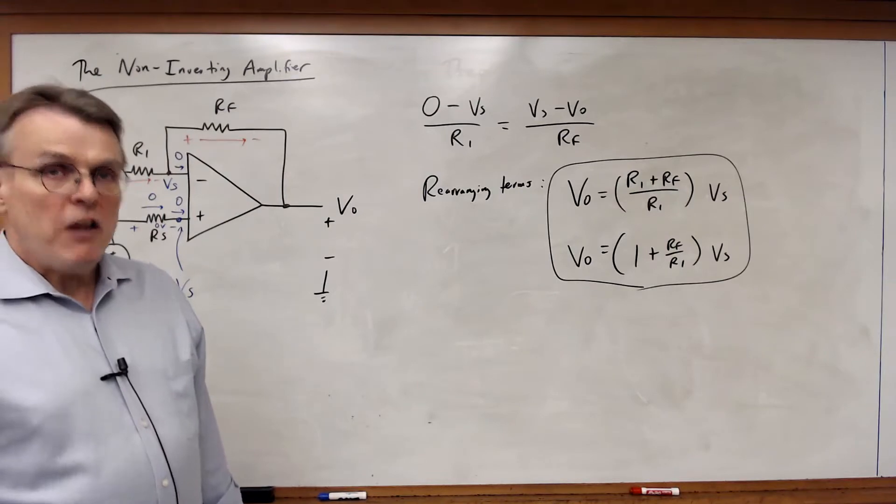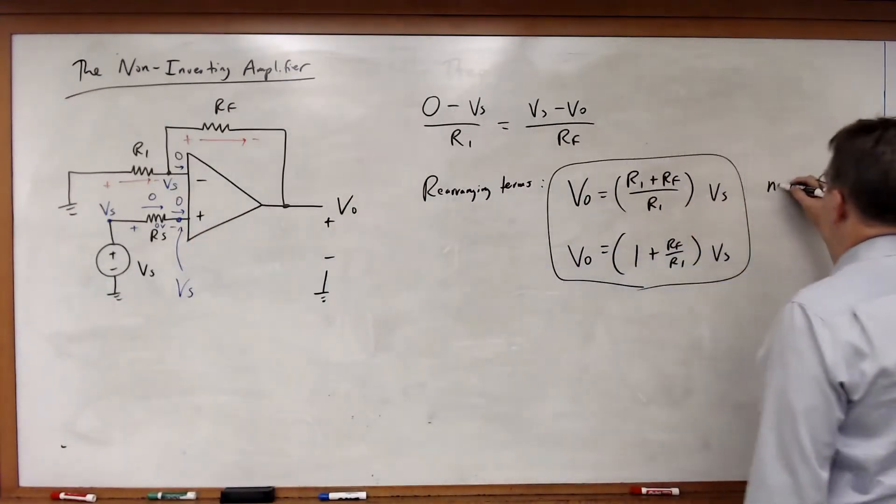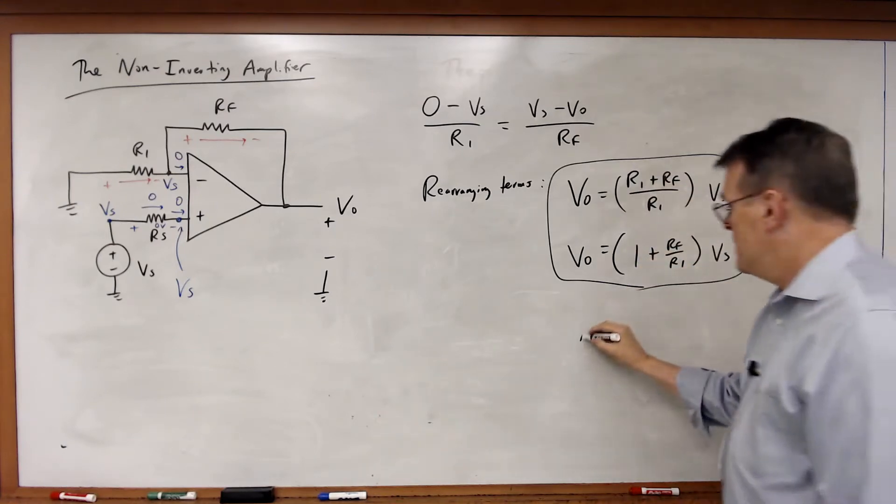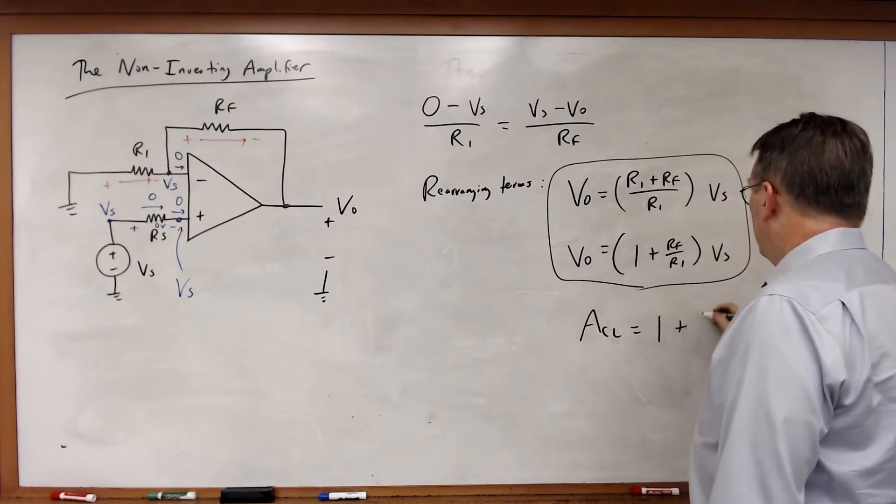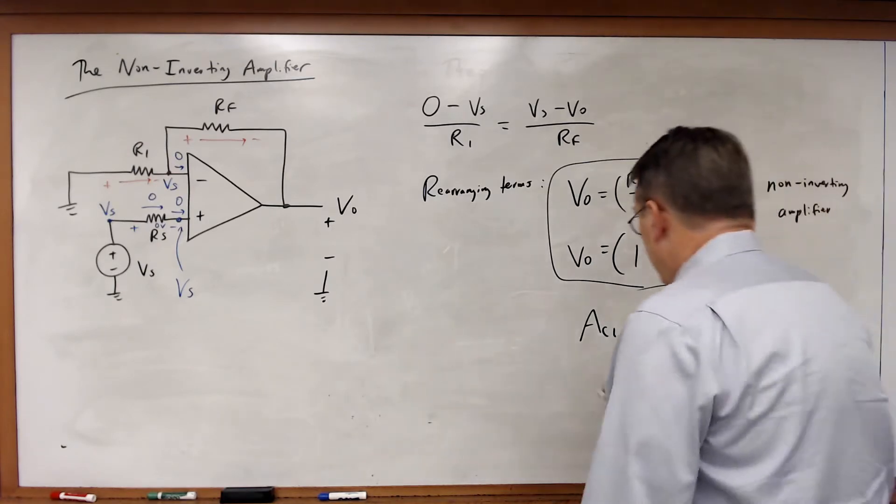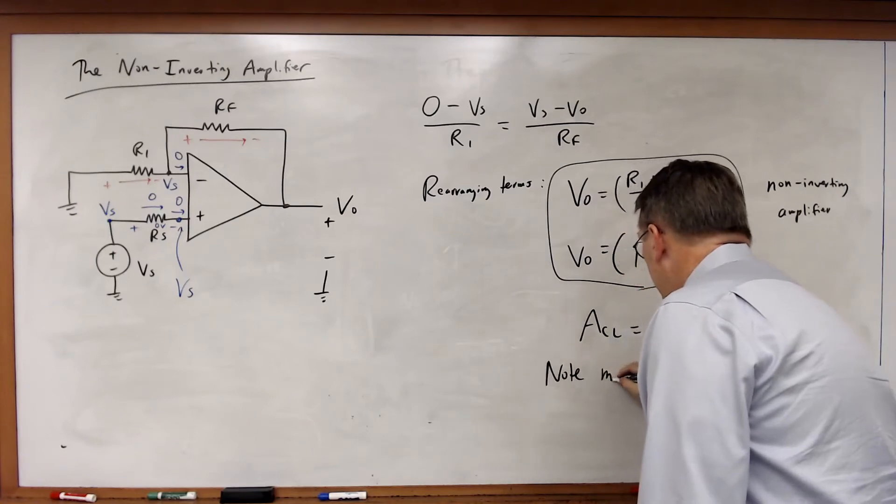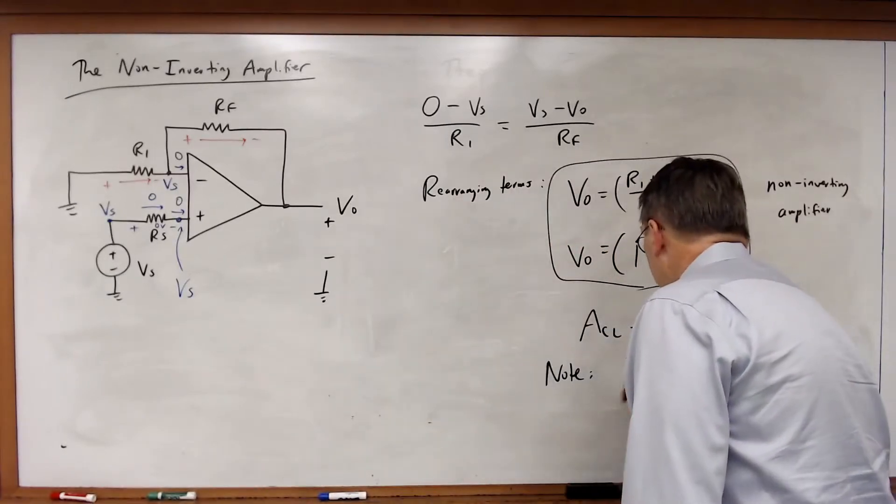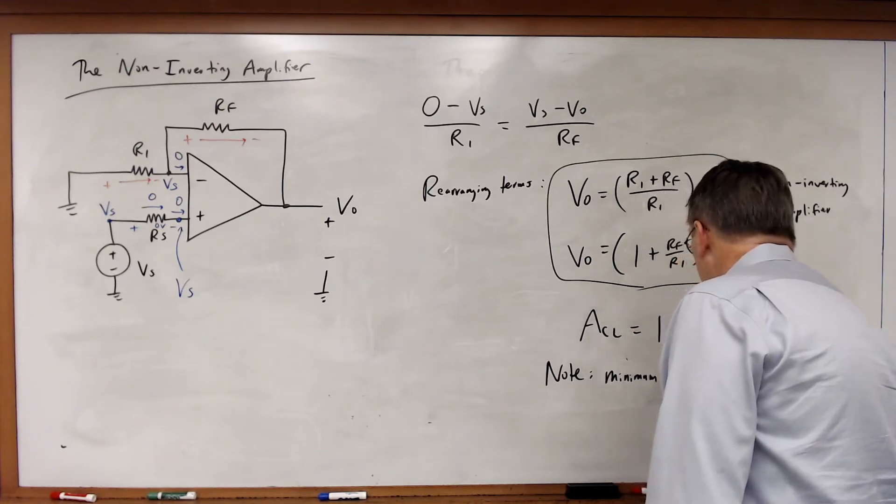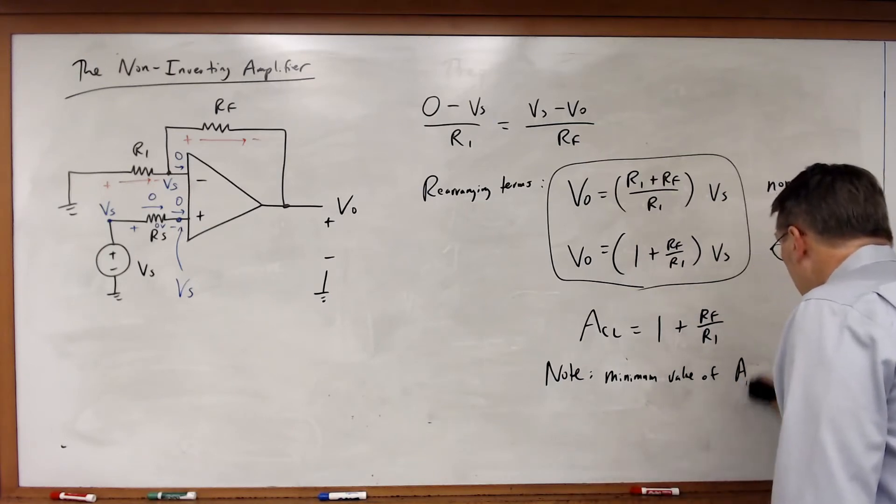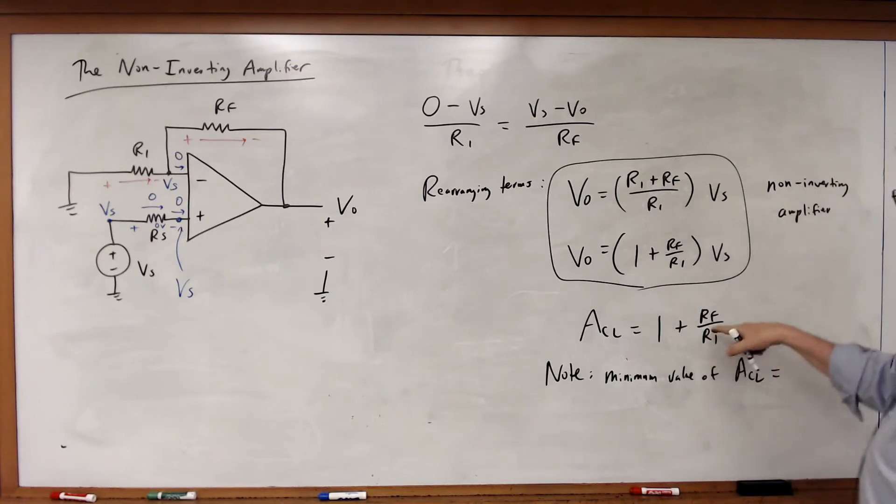This is the equation for the non-inverting amplifier. And in this case there's no negative sign. In this case the closed loop gain is equal to 1 plus RF over R1. We also note that the minimum magnitude of ACL in this case must be equal to 1.